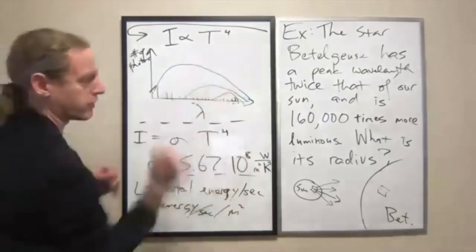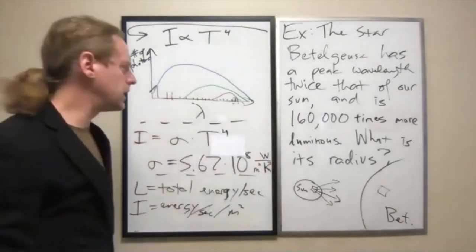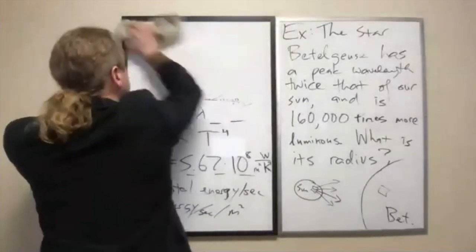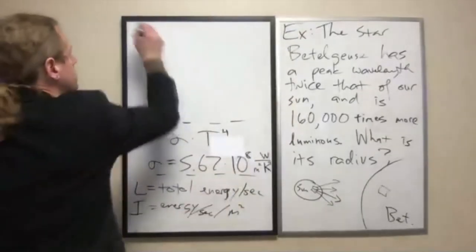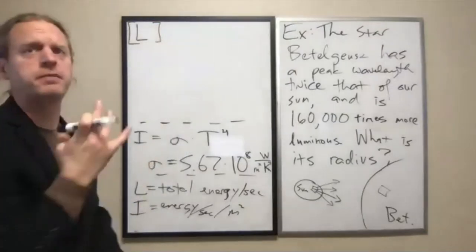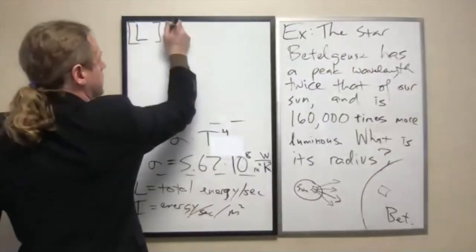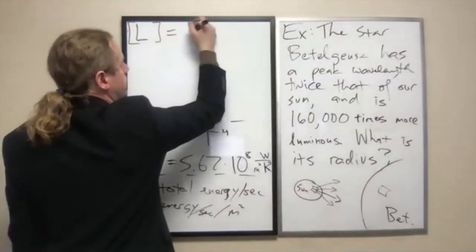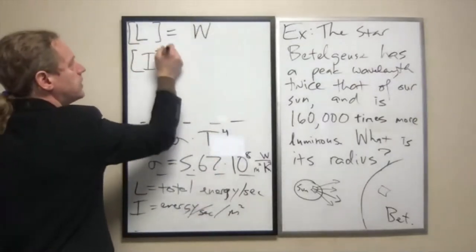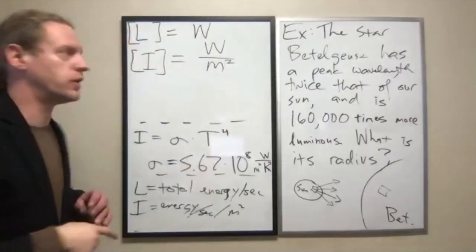Luminosity is the total energy per second, and intensity is the energy per second per square meter. And you can think of it as E over S times meters squared. So how are those two things related? The units of luminosity are simply just watts. The units of intensity are watts per square meter, or the SI units at least.